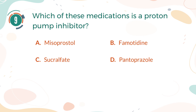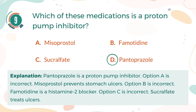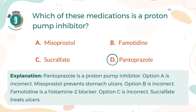The correct answer is D. Pantoprazole. Explanation: Pantoprazole is a proton pump inhibitor. Option A is incorrect. Misoprostol prevents stomach ulcers. Option B is incorrect. Famotidine is a histamine-2 blocker. Option C is incorrect. Sucralfate treats ulcers.